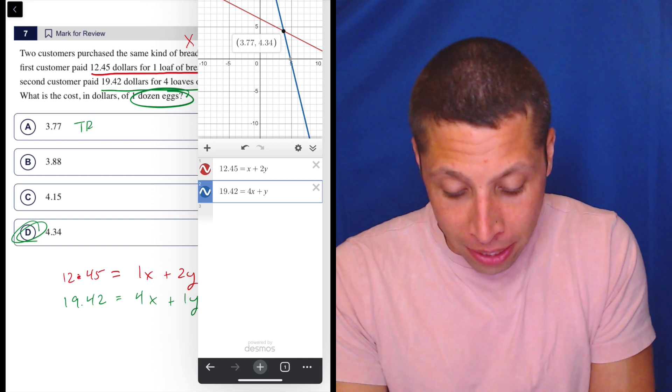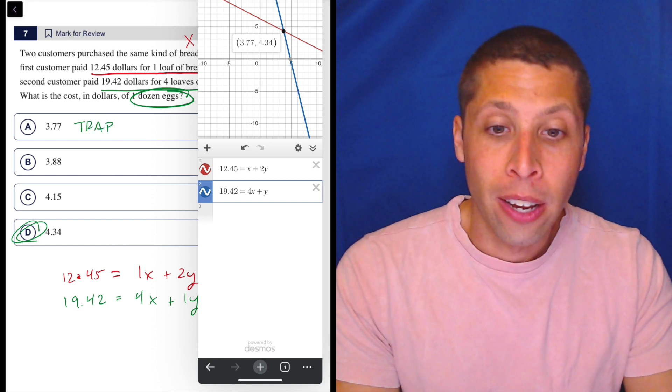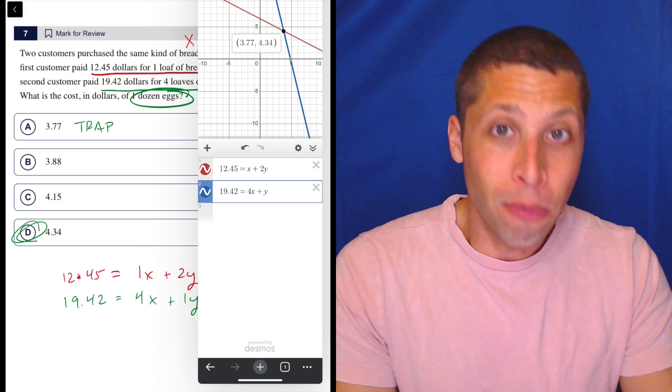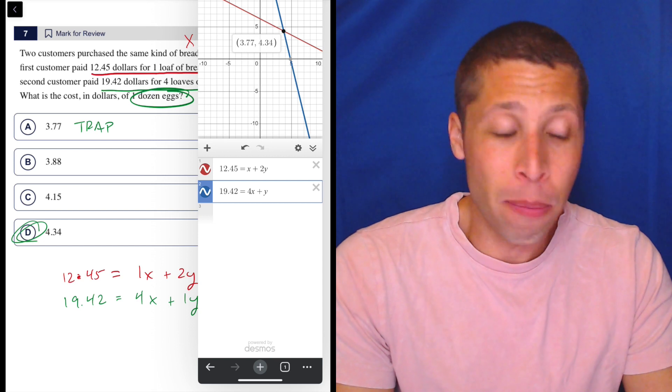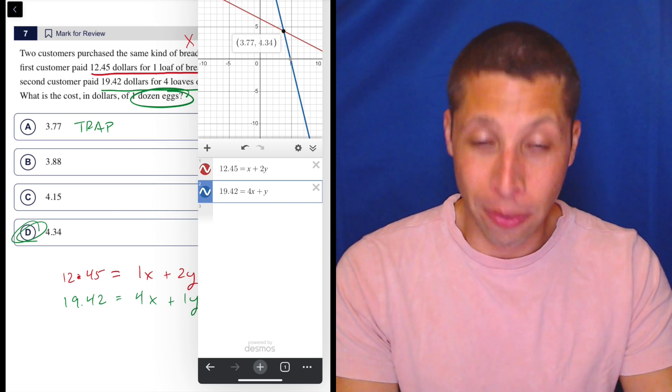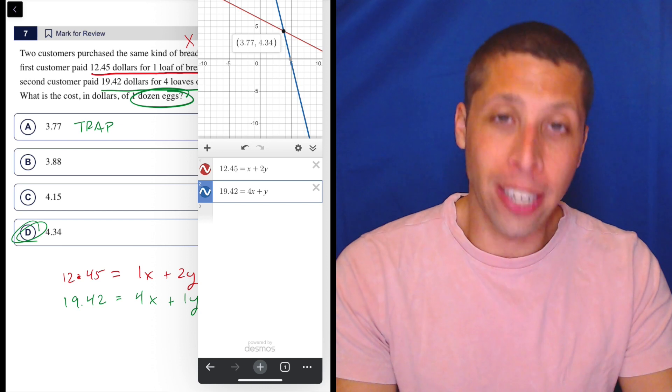So 3.77, that's the trap because that's the bread, right? So you know, that is going to happen on your SAT. That is the classic SAT trap. Hopefully you never fall for it, but you should be aware that it exists. So that way, you just do that little double take and make sure that you're giving them the right variable.